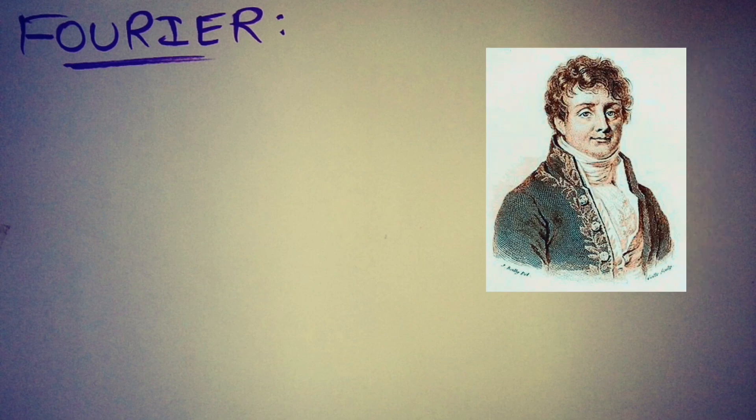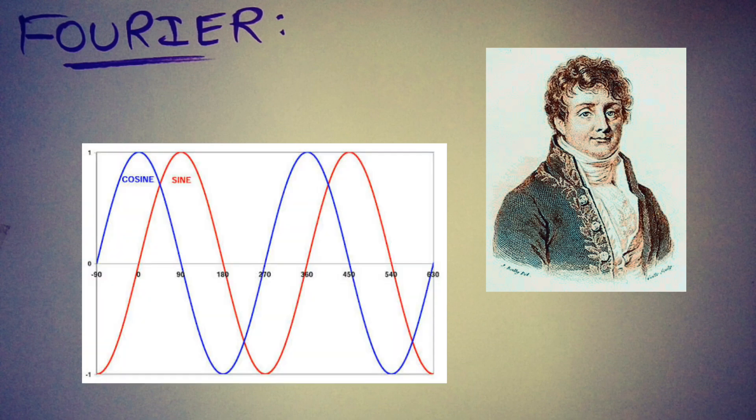Joseph Fourier, a French mathematician, had discovered a powerful theory which made the world deal in frequency domain. He states that any signal that may be either periodic or aperiodic can be expressed in terms of simple sine and cosine of different frequencies.